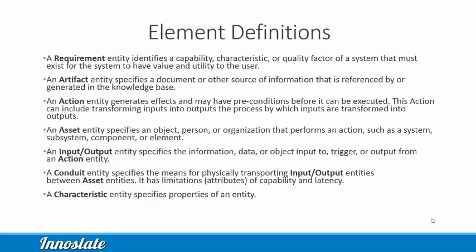An Asset entity specifies an object, person, or organization that performs an action, such as a system, subsystem, component, or element. An Input-Output entity specifies the information, data, or object input to, trigger, or output from an action entity. A Conduit entity specifies the means for physically transporting input-output entities between asset entities, and has limitations of capability and latency. A Characteristic entity specifies properties of an entity.